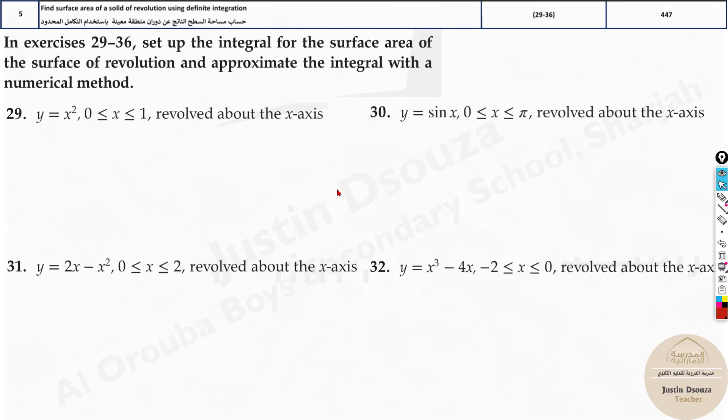Now let's look at these problems. They're very simple. First you need to know the formula. Let's write it out: integral from a to b, 2π, and the function - f(x) means y. This is f(x), and what else? Square root of 1 plus [f'(x)]².